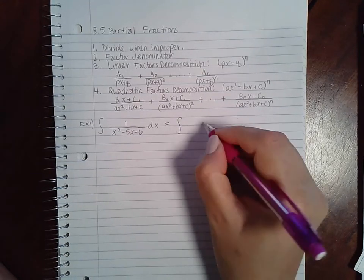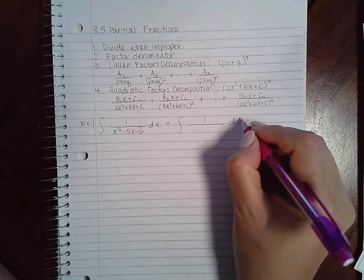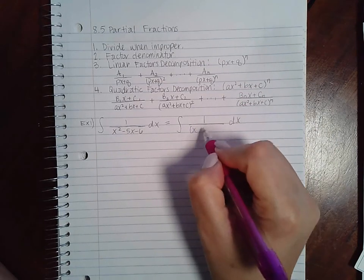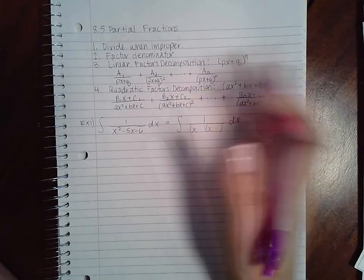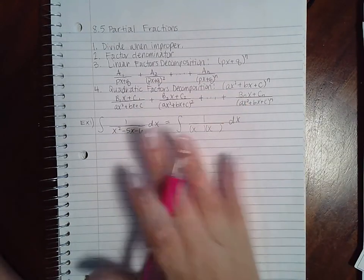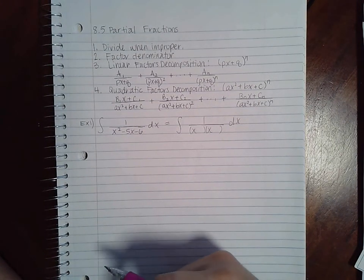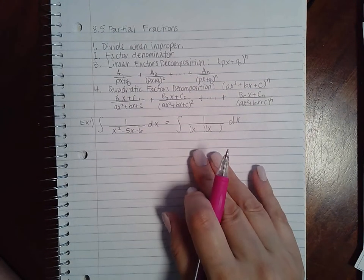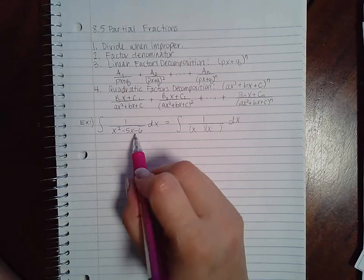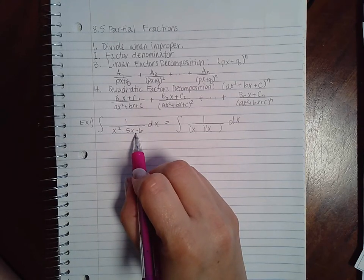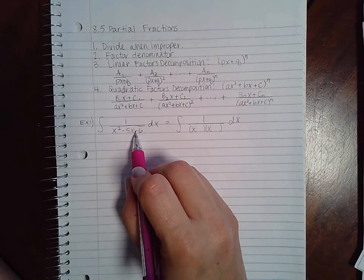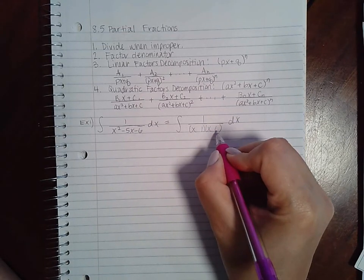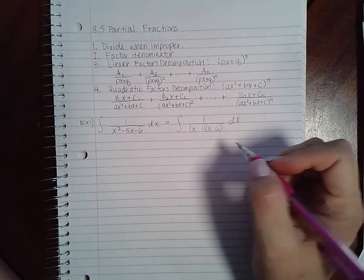So the first thing that I want to do is I want to go ahead and factor this. So we have to make sure that we factor this correctly because if you don't factor it correctly, the rest of your entire problem is wrong. Okay, so make sure that you factor this correctly. I do want two opposite signs, so they're going to have to subtract to give me five, which means one and six will subtract to give me five.